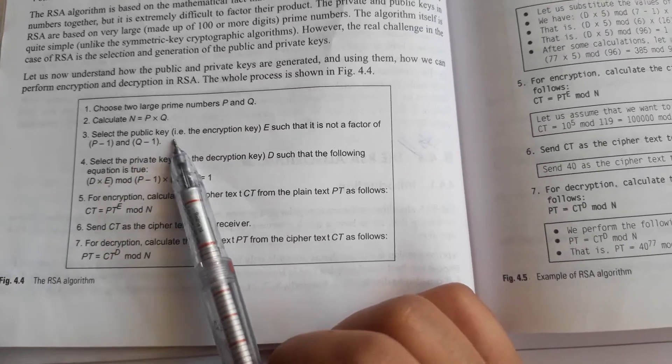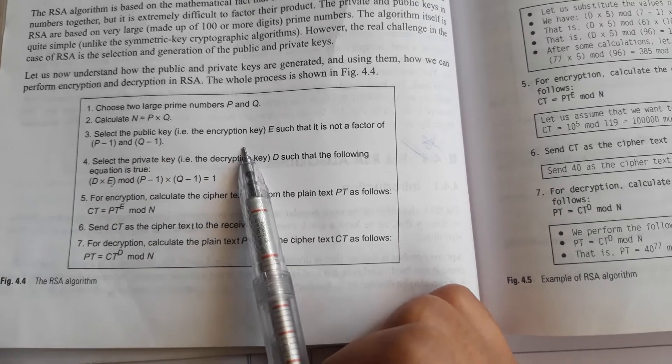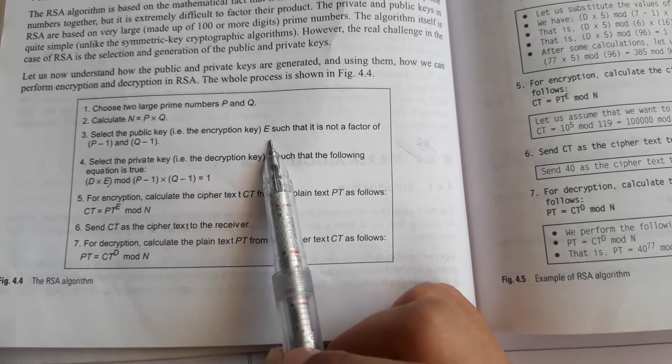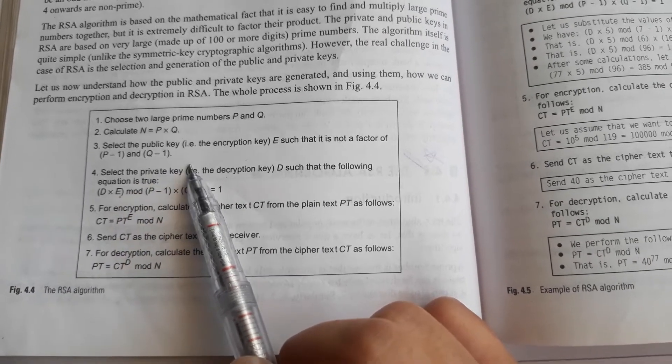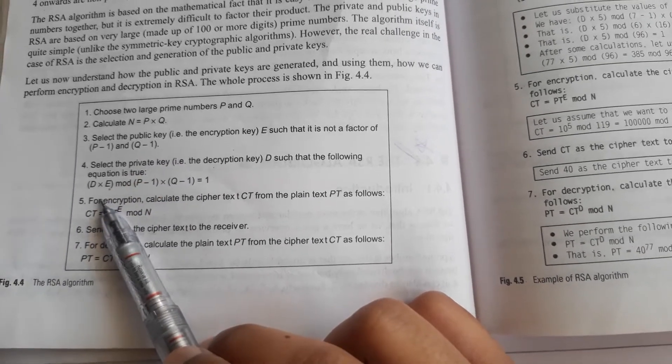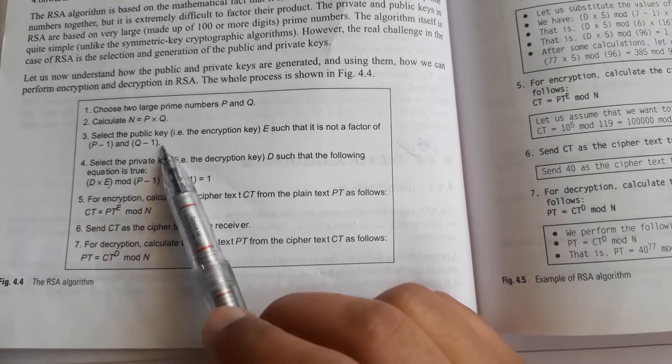Select the public key, that is the encryption key. We can represent the encryption key as E such that it is not a factor of (p-1) and (q-1). Then the next step after public key